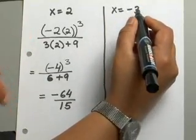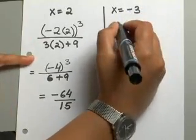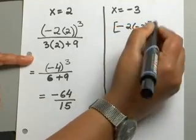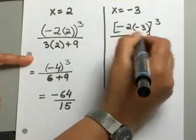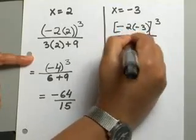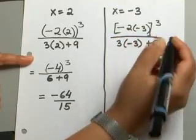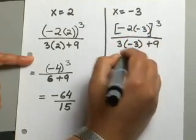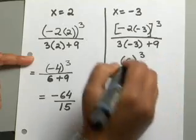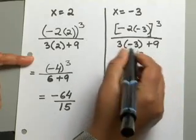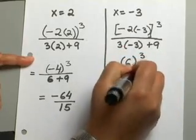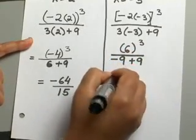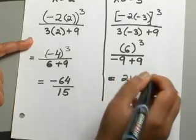Now, let's see what happens when X equals negative 3. Do the same thing. Substitute all your Xs with negative 3. And let's see what answers we come up with. So negative 2 times negative 3 is a positive 6. Positive 6 to the third power over 3 times negative 3 will give you negative 9 plus 9. And 6 to the third power will give us 216.